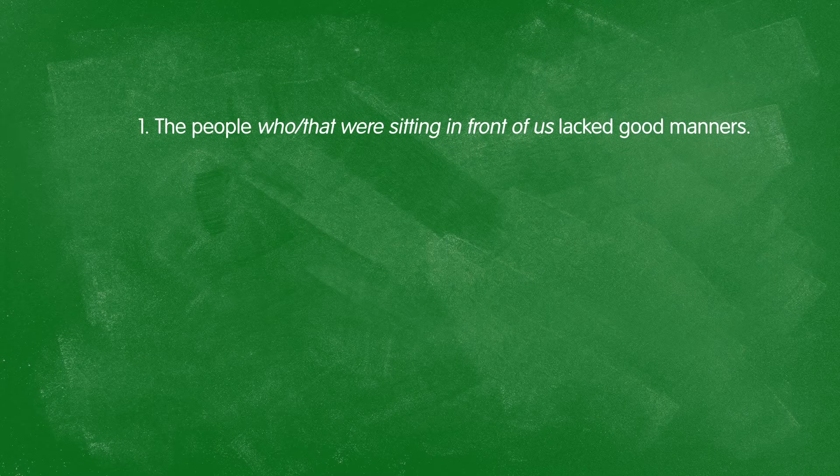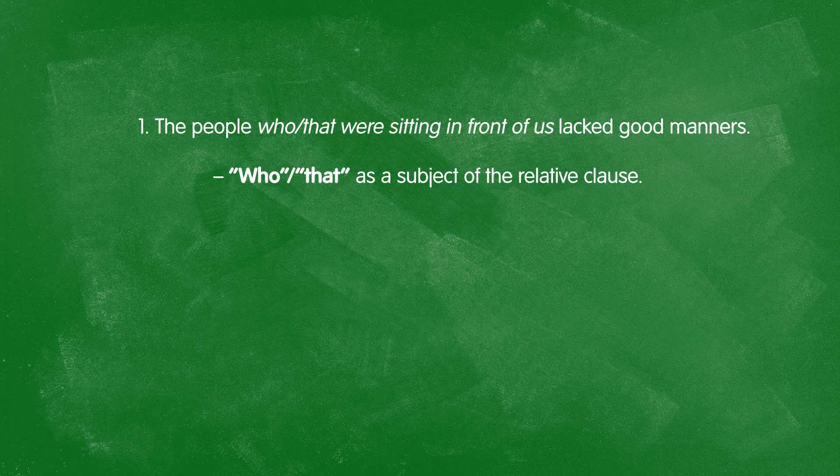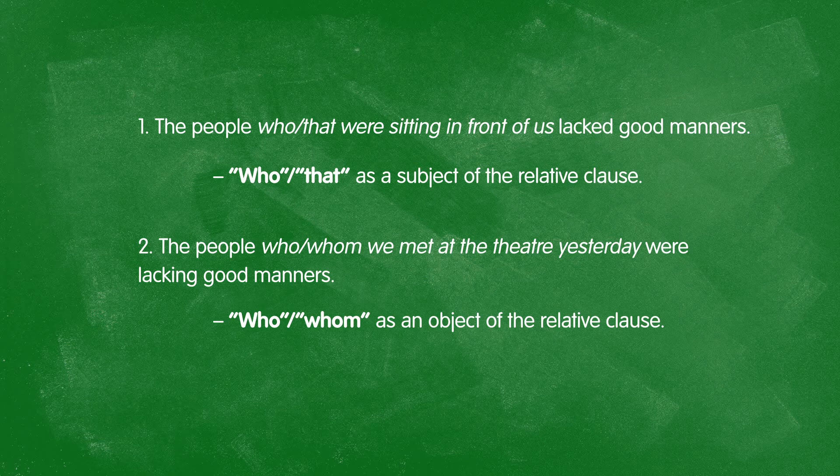Sometimes we may use the relative clause with 'who' or 'whom,' depending on whether the relative clause forms the subject or the object of the sentence. For example: the people who or that were sitting in front of us lacked good manners — here 'who' forms the subject, so you can use 'who' or 'that,' but not 'whom.' But: the people who or whom we met at the theater last night were lacking good manners — here it forms the object, so you may use 'who' or 'whom,' but not 'that.'